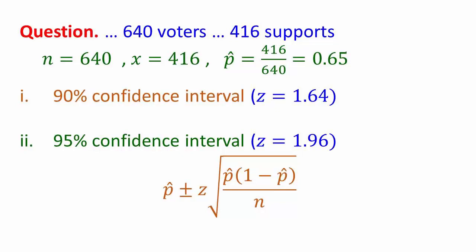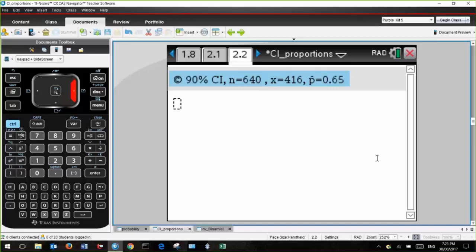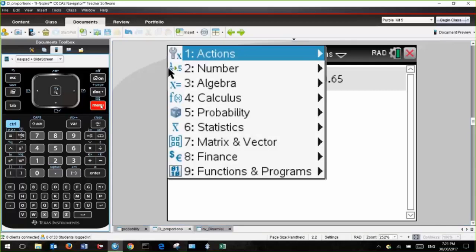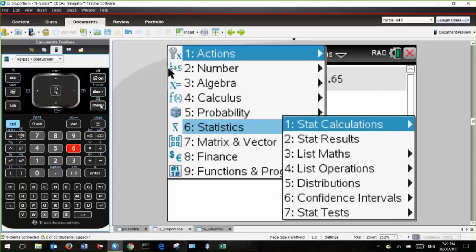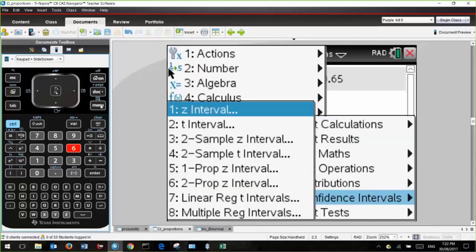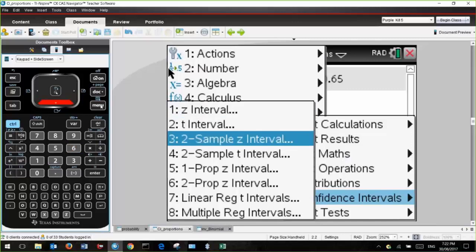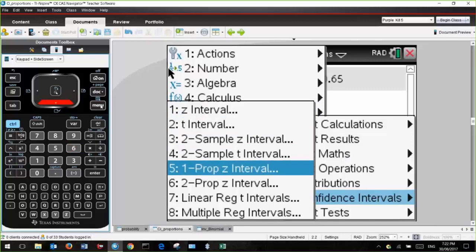However, we can do things a bit more efficiently with TI-Nspire, because it actually has a built-in command. Let's search our menu to see what might be relevant. This time it's statistical inference, so let's try number six, statistics, and we see six again, confidence intervals. There's a whole lot of options. In math methods, the only one to consider is number five: one proportion.